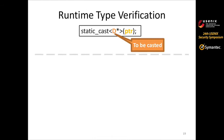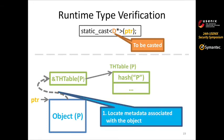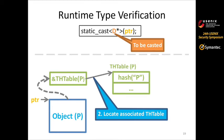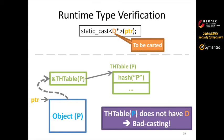For verification, given a static cast to class D, CAVER uses the TH table and runtime type tracing to verify the cast. It first locates the metadata associated with the object, then locates the associated TH table, and finally enumerates the TH table to check if the destination class D exists. In this example, because the TH table for P does not include class D, CAVER determines this is a bad casting.